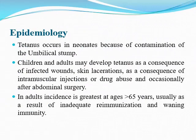Tetanus occurs in neonates — called tetanus neonatorum — when there is contamination of the umbilical stump. Unfortunately, tetanus neonatorum carries a very bad prognosis with nearly 100% mortality, unlike tetanus in adults, which is only 10% mortality. Children and adults may develop tetanus from infected wounds, skin lacerations, dirty intramuscular injections, drug abuse, or occasionally surgery.